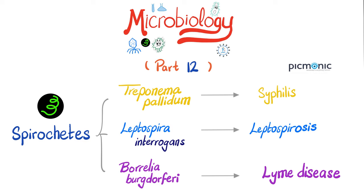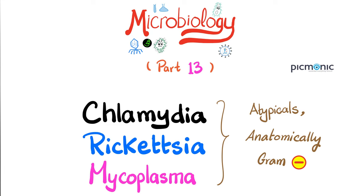Then we talked about spirochetes — anatomically gram-negative but they do not stain well with gram stain. Spirochetes include Treponema, Leptospira, and Borrelia, causing syphilis, leptospirosis, and Lyme disease, respectively. Today we have more atypical organisms. These bacteria are anatomically gram-negative, but when we actually stain them with gram stain, they do not stain at all. We need another technique to diagnose them. These include chlamydia, rickettsia, and mycoplasma.